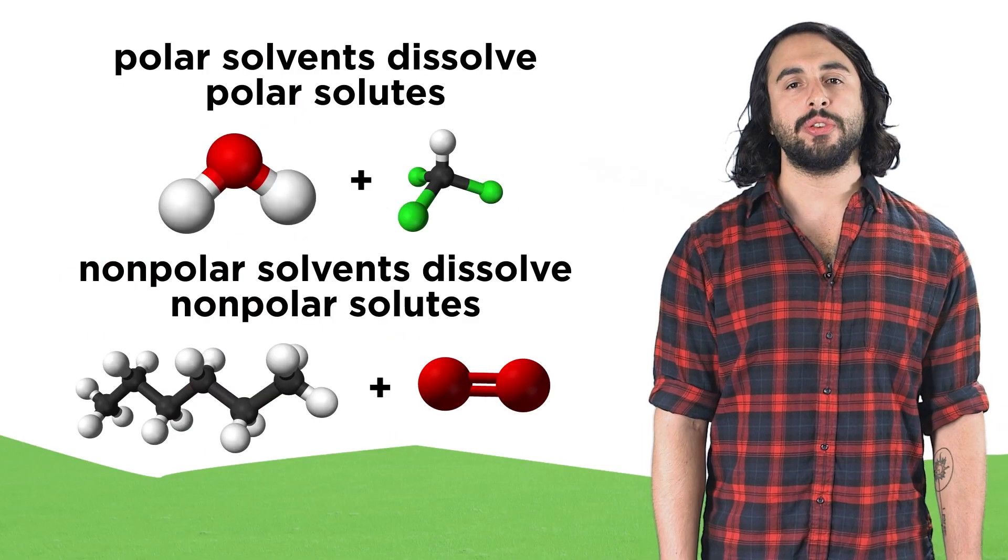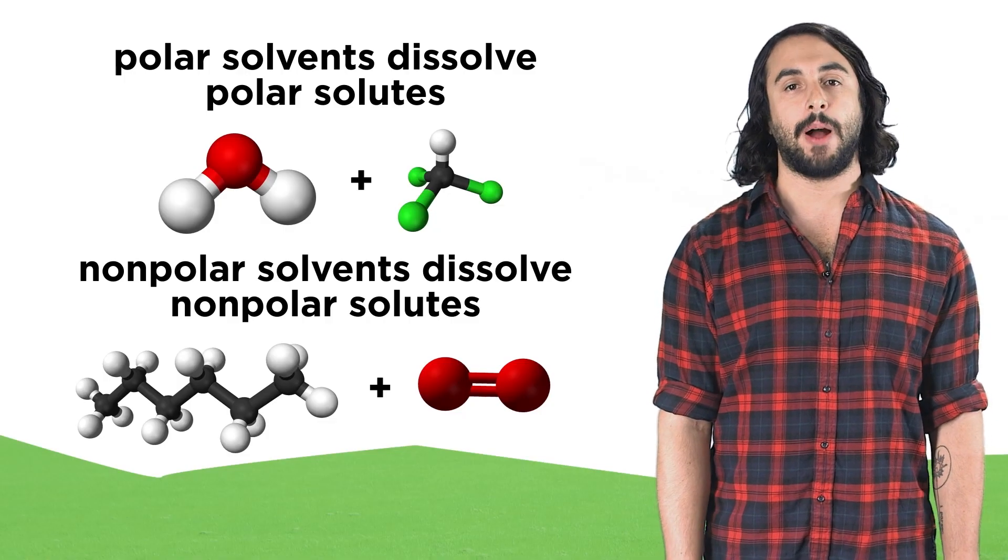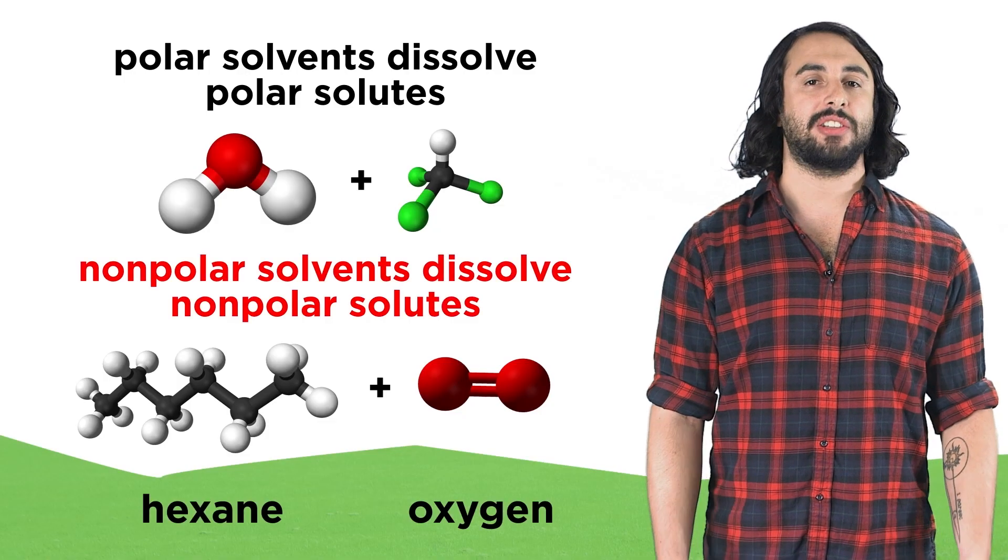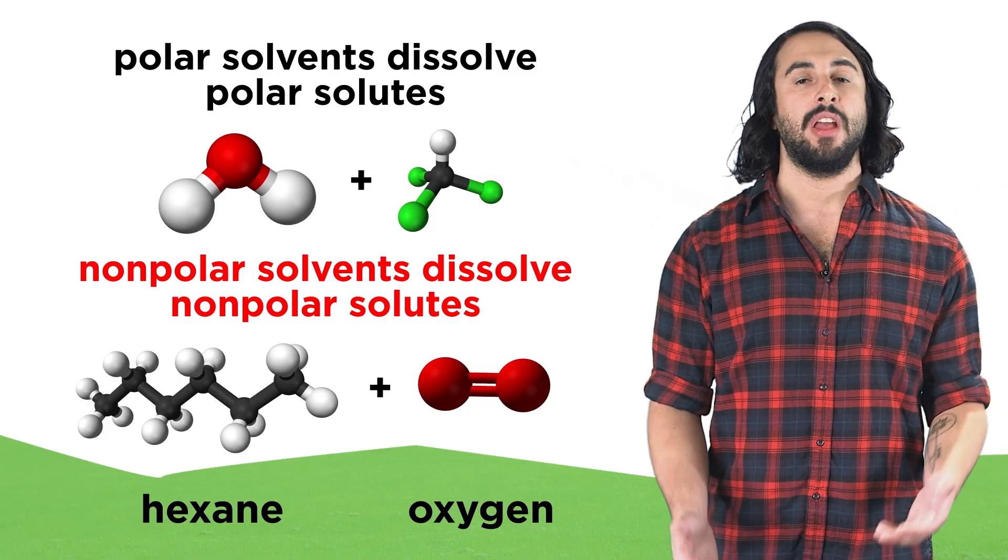For this reason, we should also discuss the identity of the solvent, since that will make a big difference. Something like oxygen will be twenty times more soluble in hexane than in water.